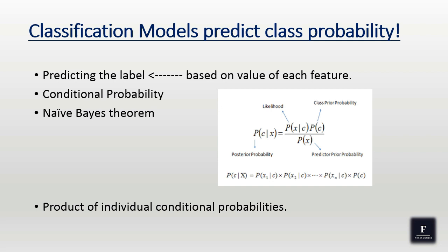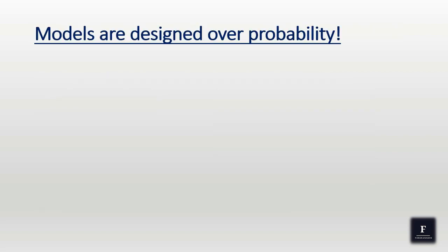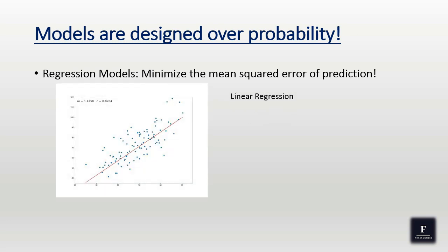The next task in machine learning is that of designing. Even the models are designed over probability. How come? You know about regression models, right? Regression models minimize the mean squared error of prediction. Linear regression tries to design the regression line that best fits the data.